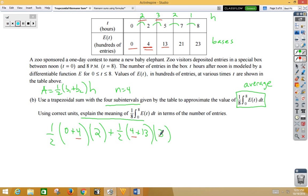Our third trapezoid, 1/2. Remember we're going to use the 13 twice now, so 13 plus 21 with our height of 2. And our final trapezoid, 1/2. We're using the 21 twice, plus our final number, 23 times the height of 1.